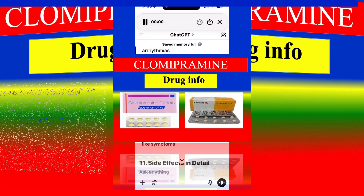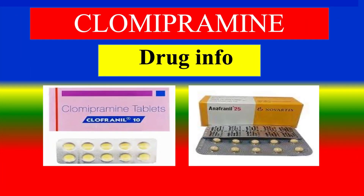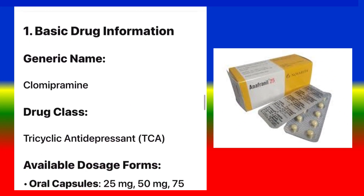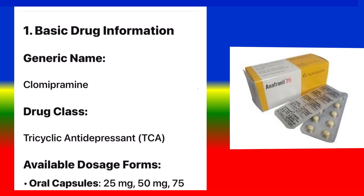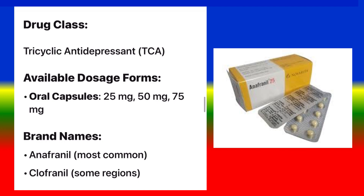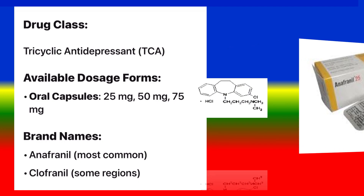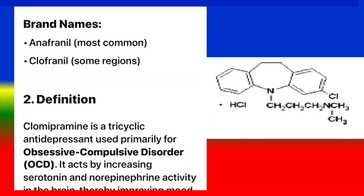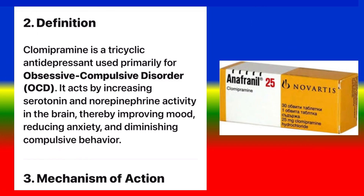Clomipramine — Basic Drug Information. Generic name: clomipramine. Drug class: tricyclic antidepressant (TCA). Available dosage forms: oral capsules, 25 mg and 75 mg. Brand names: Anafranil (most common), Clofrenil in some regions. Clomipramine is a tricyclic antidepressant used primarily for obsessive-compulsive disorder (OCD). It acts by increasing serotonin and norepinephrine activity in the brain, thereby improving mood, reducing anxiety, and diminishing compulsive behavior.